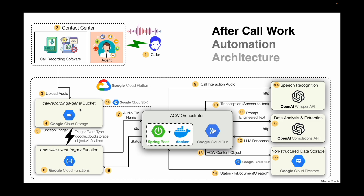Primary building blocks of ACW automation are call recordings and a bucket in GCP's Cloud Storage, where recordings get uploaded by the call recording software. The next is the ACW event trigger — a serverless backend implemented using GCP's Cloud Function. This function gets triggered when a file is uploaded in the cloud storage. Next is the ACW Orchestrator, a Spring Boot-based REST API hosted on GCP's Cloud Run. Cloud Run is a managed compute platform that lets you run containers directly on top of Google's scalable infrastructure. This REST API provides functionalities like audio transcription, call recording analysis for after call work.